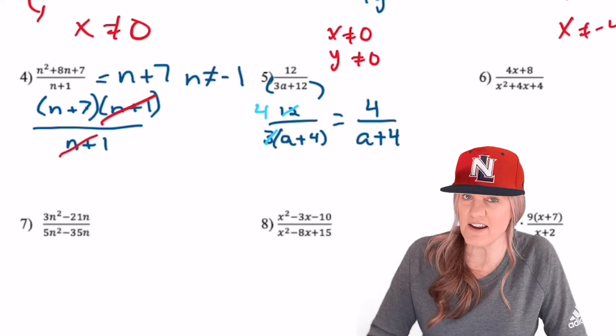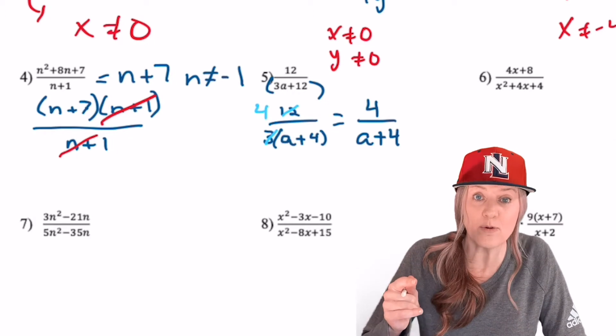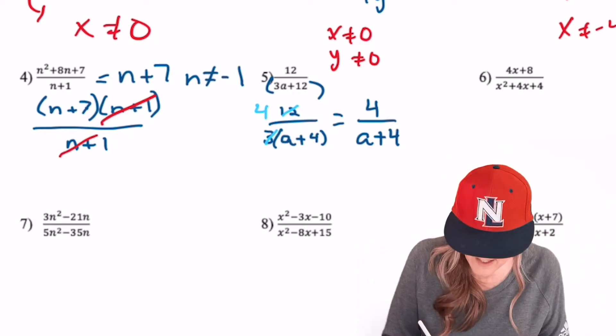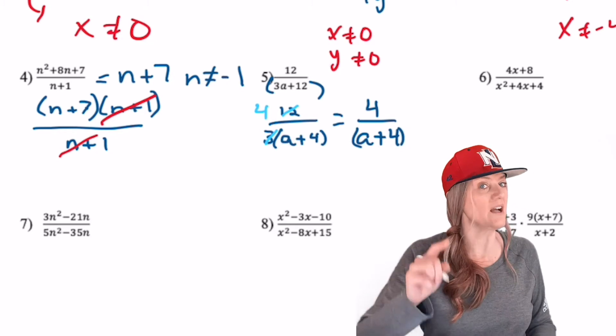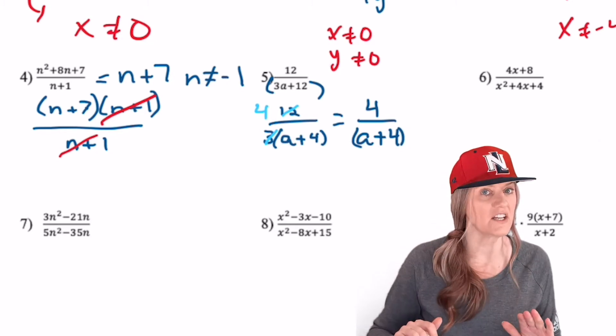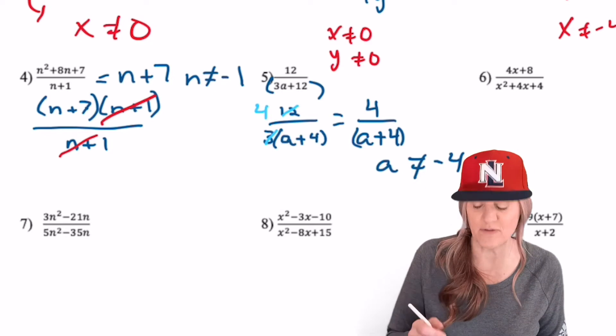Really trying to make a point here. Can we divide the 4s out now? No! Hug this out. Every sum and difference should be hugged out. All of it goes or none of it goes. What's our excluded value? Negative 4.